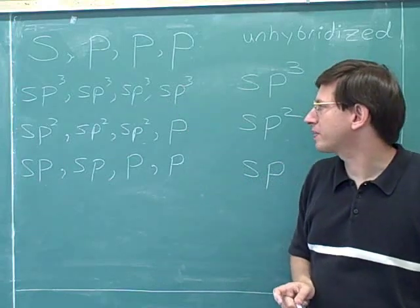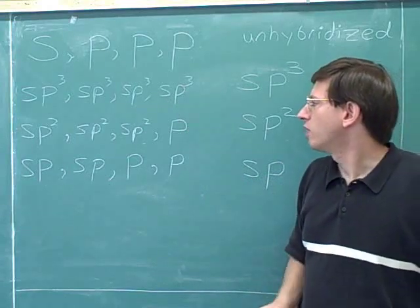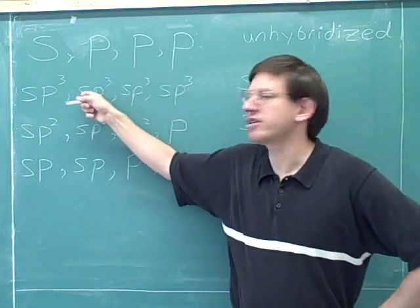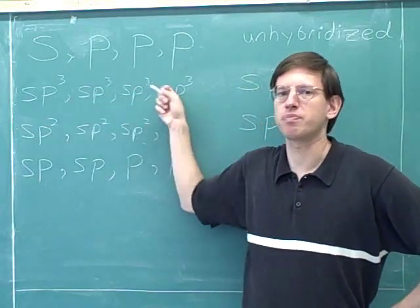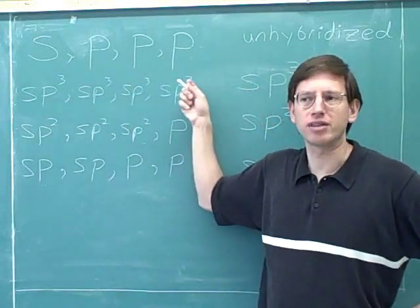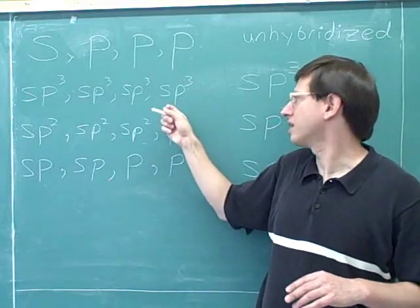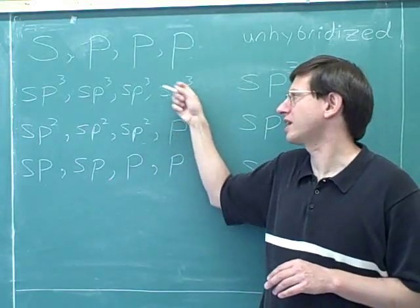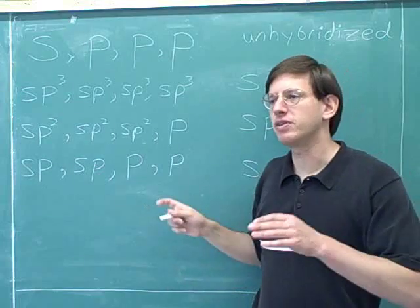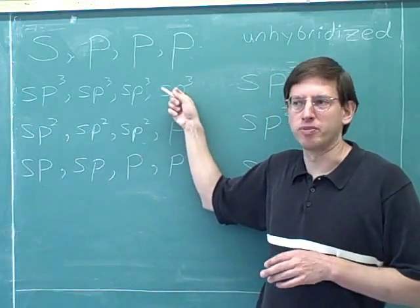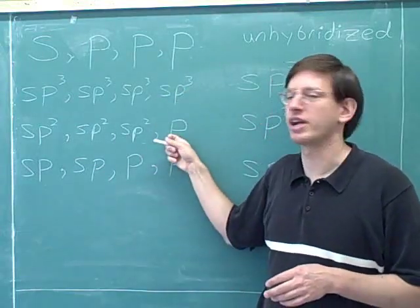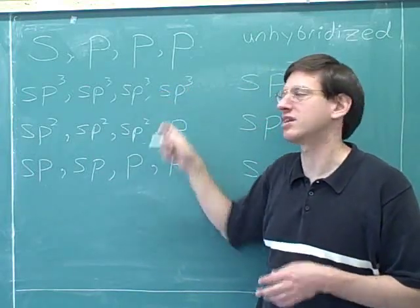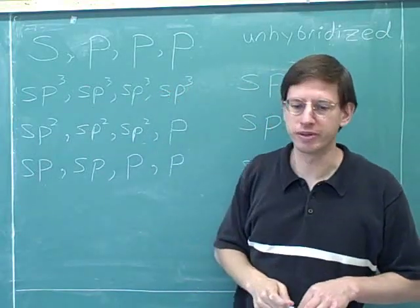It's easy to get confused here because the notation sp3 contains the letter 'p,' but these are not p orbitals — they are sp3 orbitals. If something is a true p orbital, we write just the letter p by itself. Don't let the symbol mislead you: sp3 orbitals are not p orbitals.